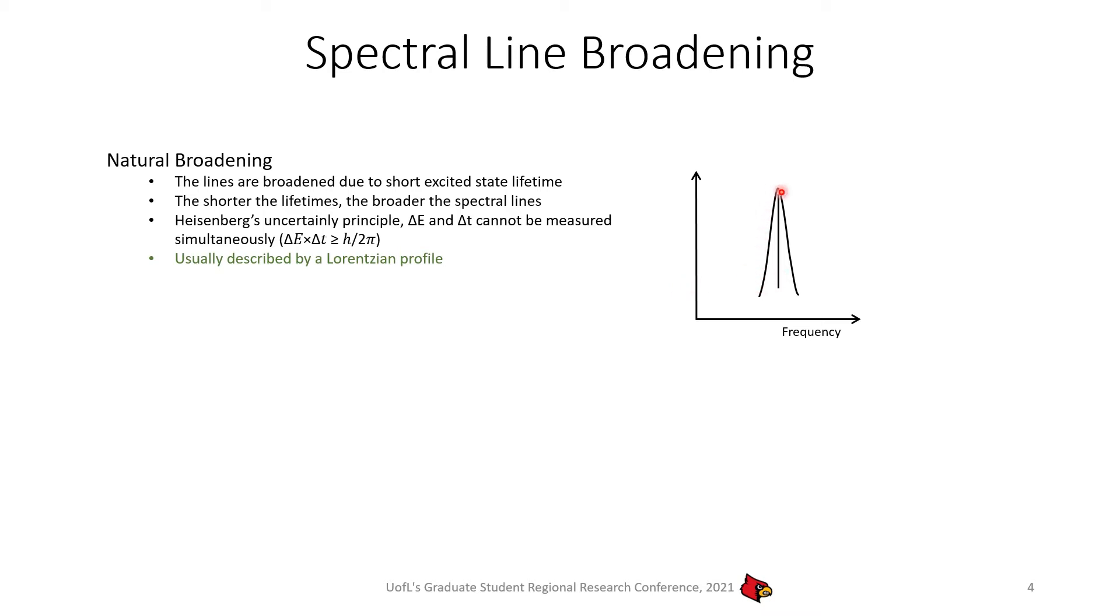The next spectral line broadening is pressure broadening. This kind of broadening happens due to the collision in the molecular sample. It depends on the density and temperature of the gas. Usually, this is also described by a Lorentzian profile.